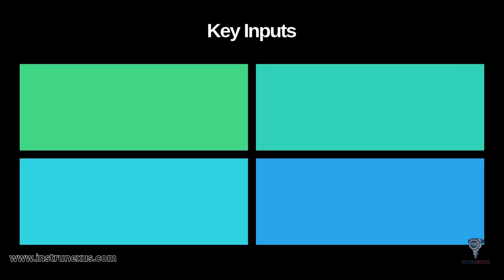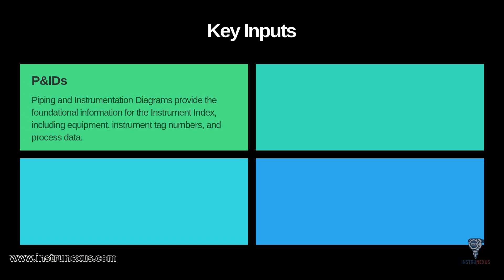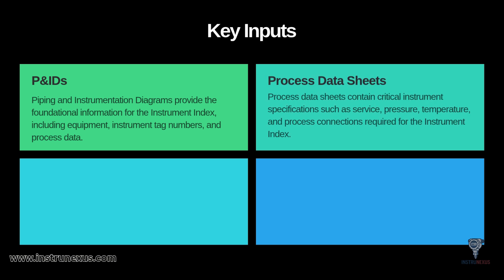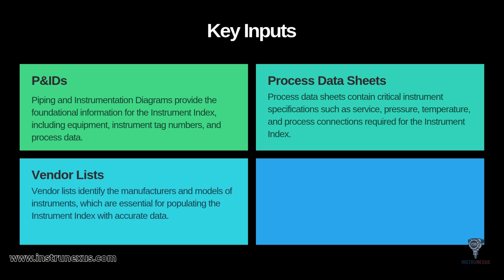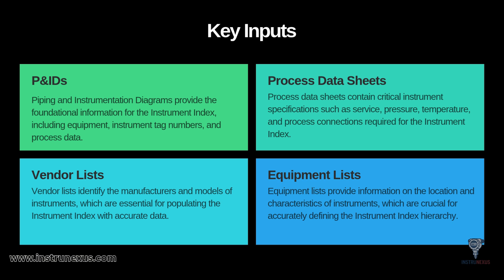You can't create an Instrument Index from thin air — its accuracy depends entirely on the quality of its key inputs. First and foremost are the P&IDs, which provide the foundational information including all the equipment, instrument tag numbers, and process data. Next, you need the process data sheets, which contain critical specifications like the service, operating pressures, temperatures, and process connection details. You'll also pull from vendor lists, which identify the approved manufacturers and models for the instruments, and from equipment lists, which provide information on the location and characteristics of the instruments.